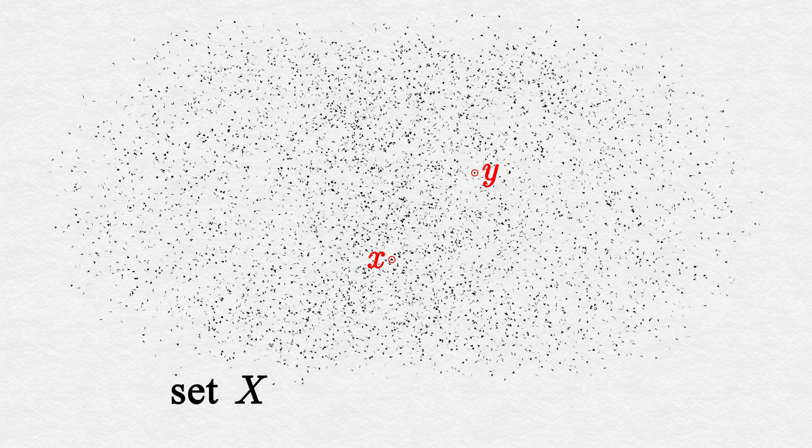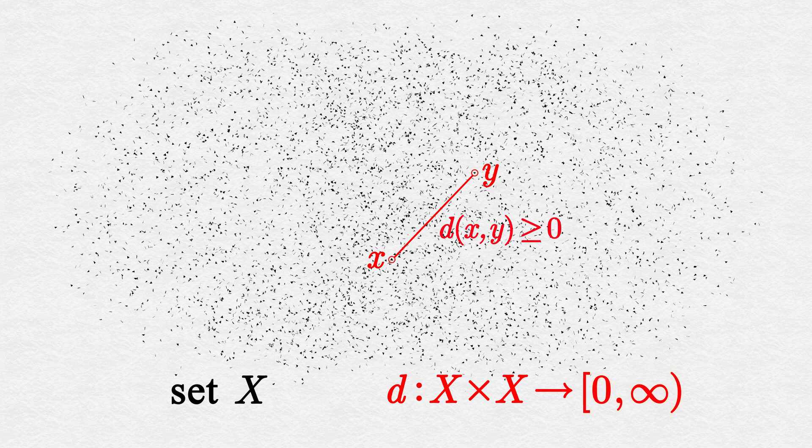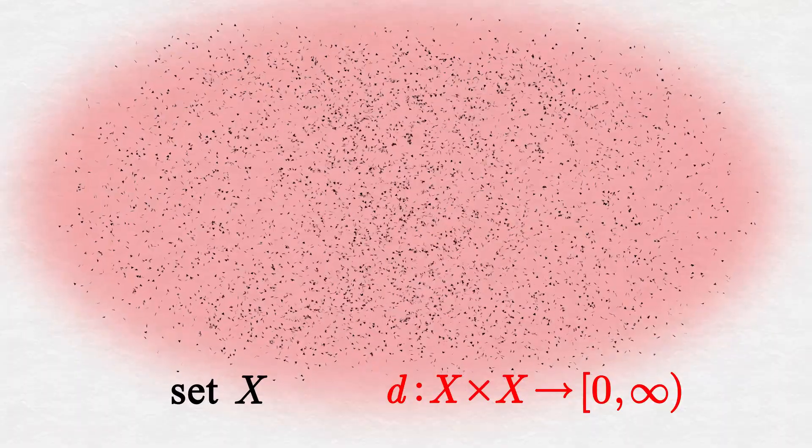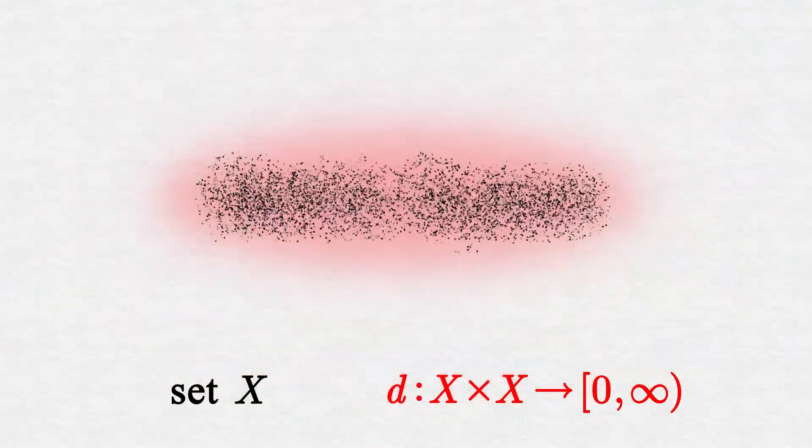Specifically, for each pair of elements x and y in the set X, we define their distance to be some non-negative real number, which we denote by d(x,y). This assignment of a distance to each pair of points mathematically constitutes a function whose inputs are pairs of points of X and whose outputs are non-negative real numbers. This function tells us how far each element of X is from each other one, thereby arranging the loose grains of the set X and serving as the epoxy that holds them together.